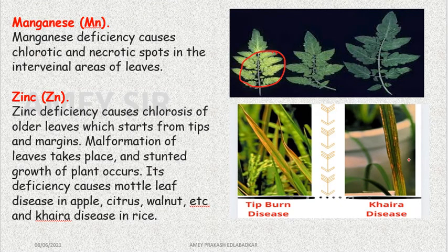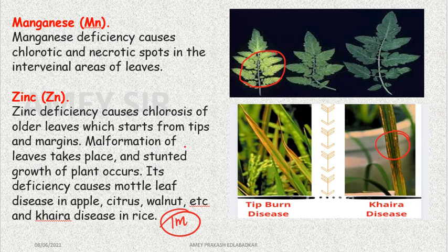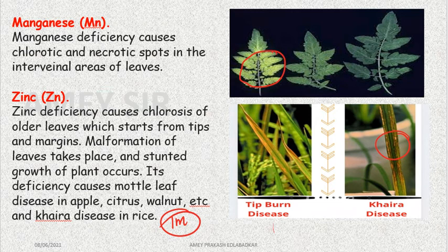Deficiency of zinc causes khaira disease in rice — this is an important exam question. Malformation of leaves occurs; leaves do not form properly and do not have proper growth. These effects are also seen in commercially important plants like apple, citrus, and walnut.